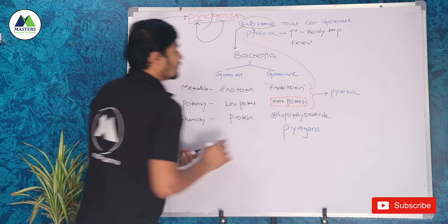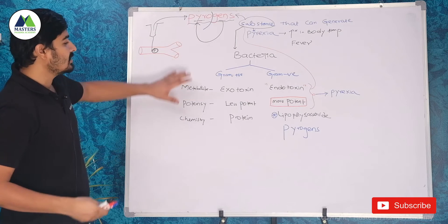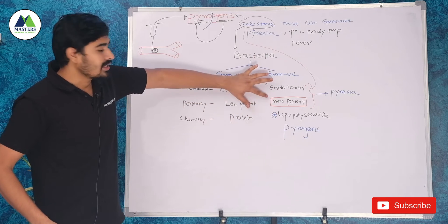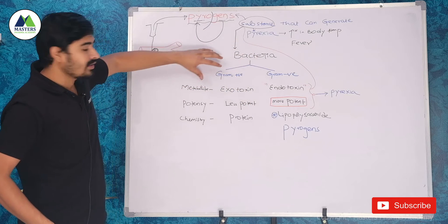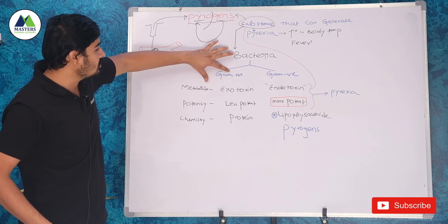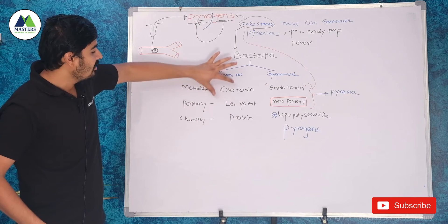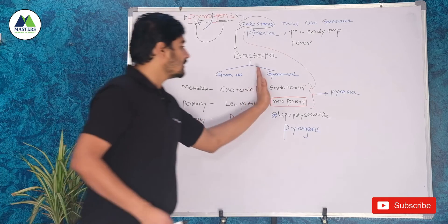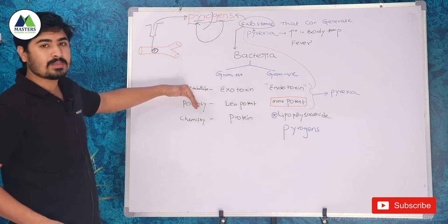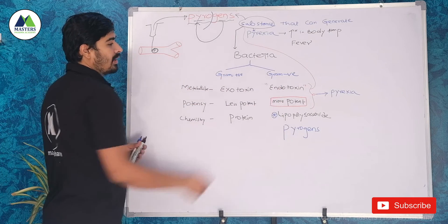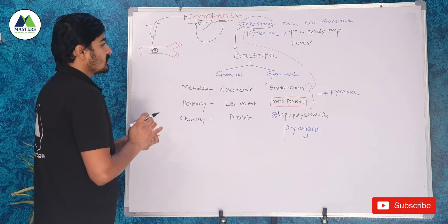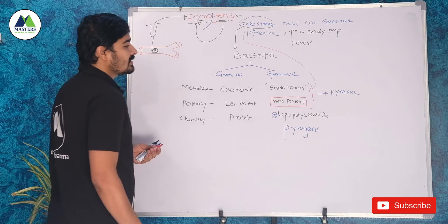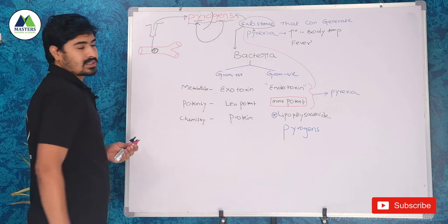For examination purposes: gram negative bacterial metabolite is lipopolysaccharide in nature, called endotoxins, and is more potent. Gram positive bacterial metabolite is protein in nature, called exotoxins, and due to least potency does not cause pyrexia. Therefore, pyrogens are nothing but gram negative bacterial metabolites — endotoxins that cause pyrexia.